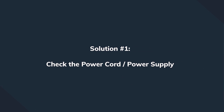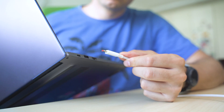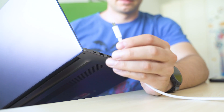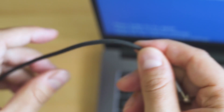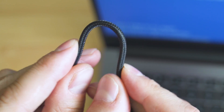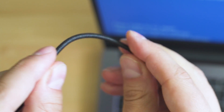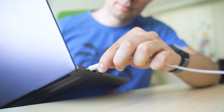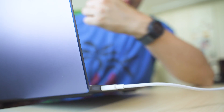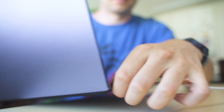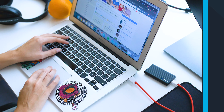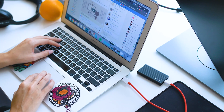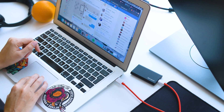Solution one: let's imagine your computer might have a power source issue. Start by checking the basics — inspect the power cord and make sure it's connected to the socket properly. An unexpected shutdown could also occur due to a damaged power cord. If you have a spare charger or another power cable, try using it to power on your computer. If it's still not changing the condition, move on to solution two.